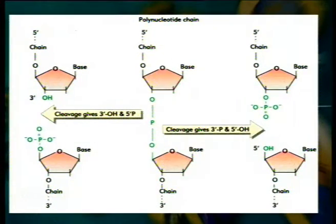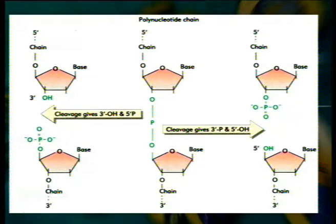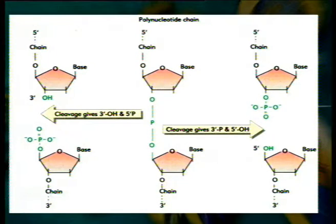When DNA is broken into its constituent nucleotides, the cleavage may take place on either side of the phosphodiester bond. Depending on the circumstances, nucleotides have their phosphate group attached to either the 5' or the 3' position of the pentose. Therefore, the two types of nucleotides released from nucleic acids are nucleoside 3'-monophosphates and nucleoside 5'-monophosphates.